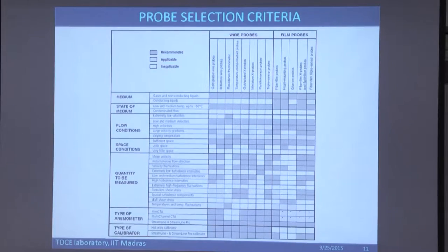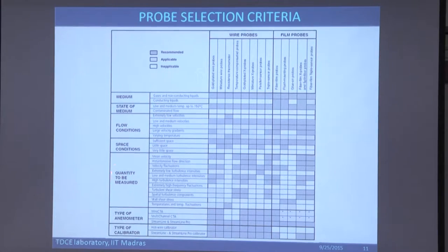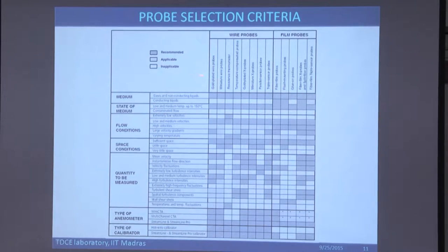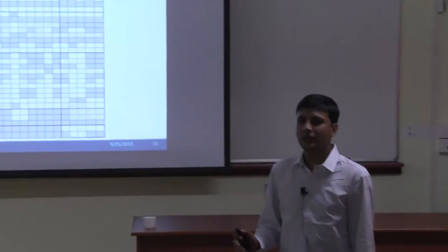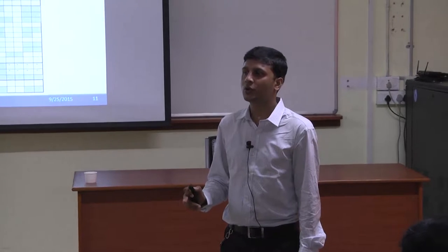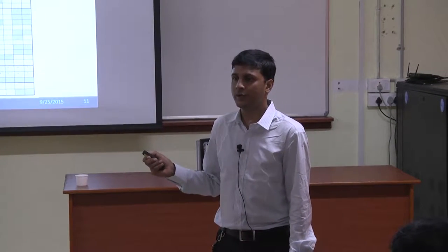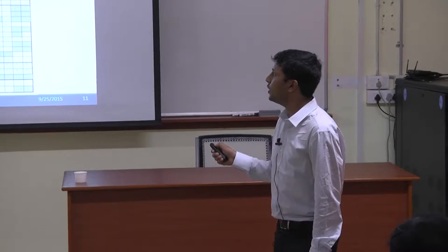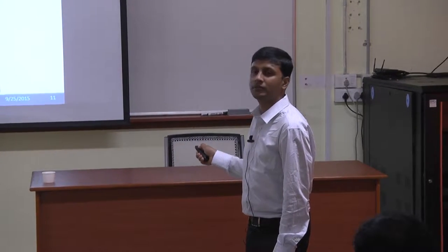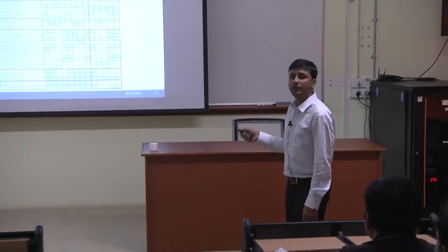There is an important selection chart showing criteria — medium state, flow condition, space condition, quantity to be measured — based on which you choose the probe type. All these probes work with the Streamline probe or mini-CTA setup. This chart is from Dantec; other manufacturers like TSI also make hot wire setups, but the discussion here is based on Dantec.